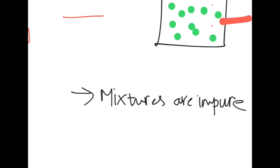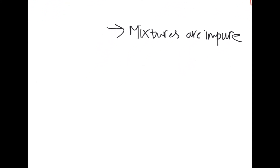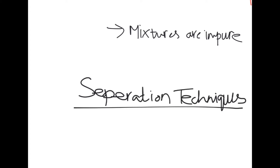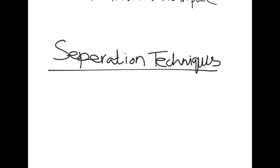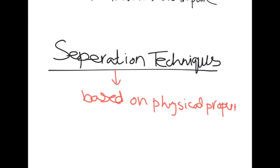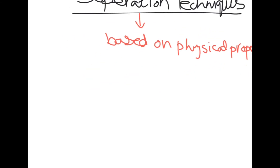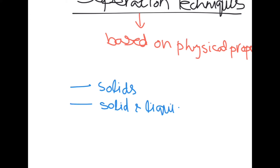Mixtures are impure substances, and in the separation techniques our main goal would be to extract a substance from a mixture. We do that based on the physical properties of the substances — their changes in boiling point, melting point, and solubility help us separate them from mixtures. We will be looking at three types of mixtures: mixtures of solids, mixtures of solids and liquid, and mixtures of liquid.